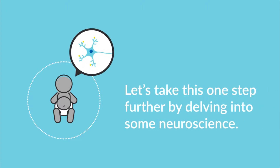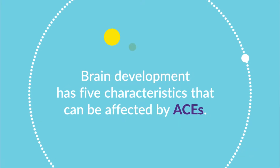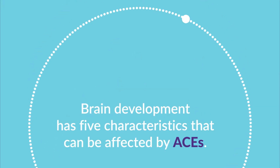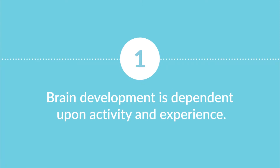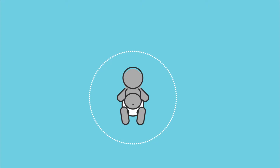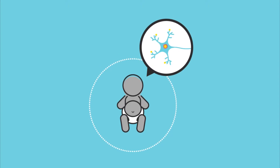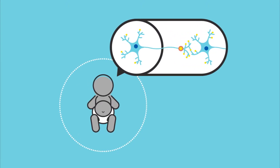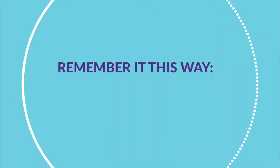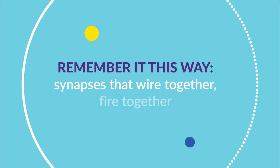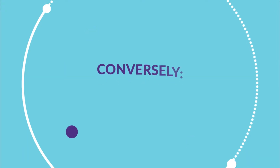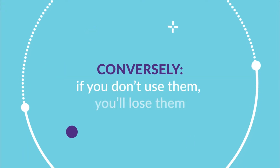Let's take this one step further by delving into some neuroscience. Brain development has five main characteristics that can be affected by ACEs. First, brain development is dependent upon activity and experience. Brain synapses and pathways are formed and strengthened over time as a person interacts with their environment. Remember it this way: synapses that wire together, fire together. Conversely, if you don't use them, you'll lose them.